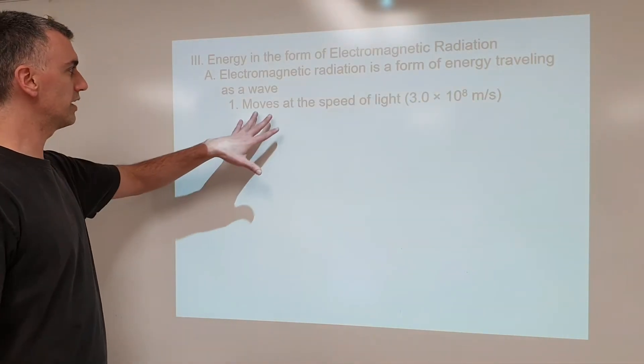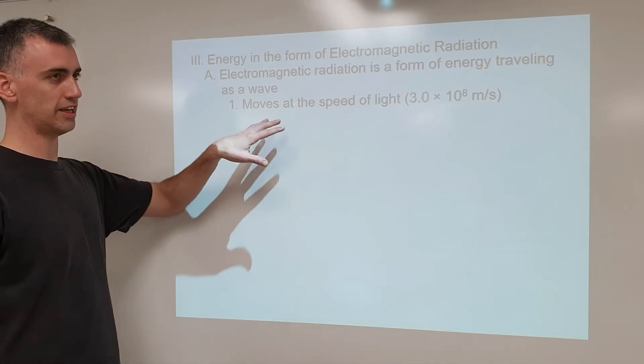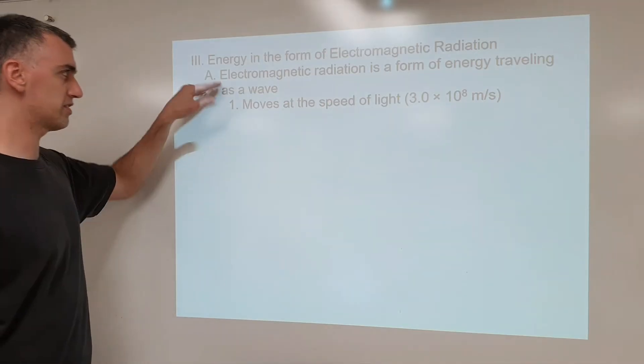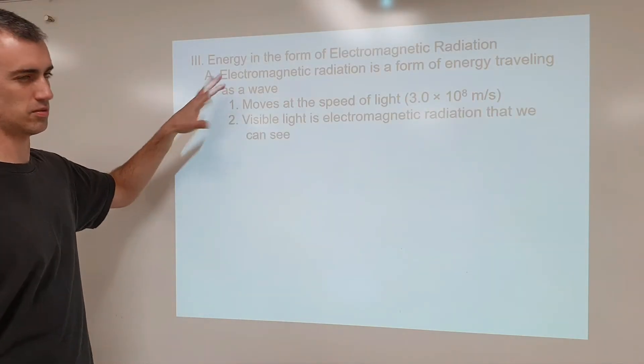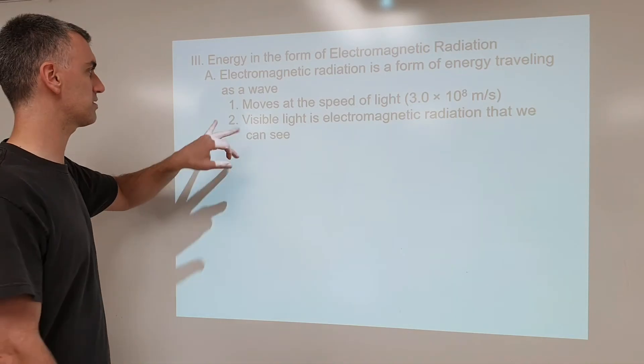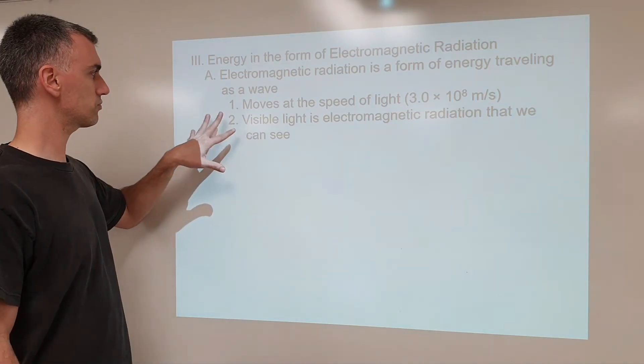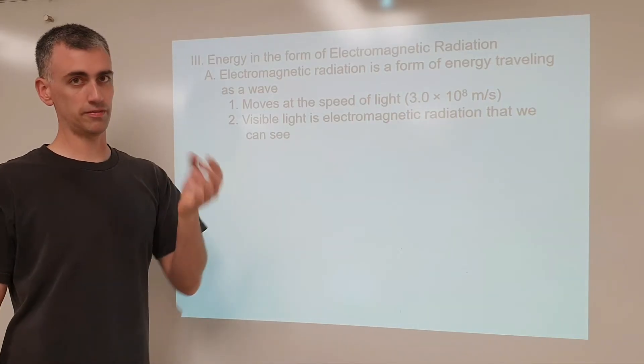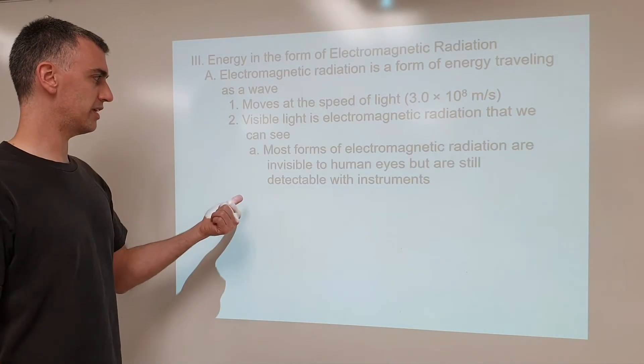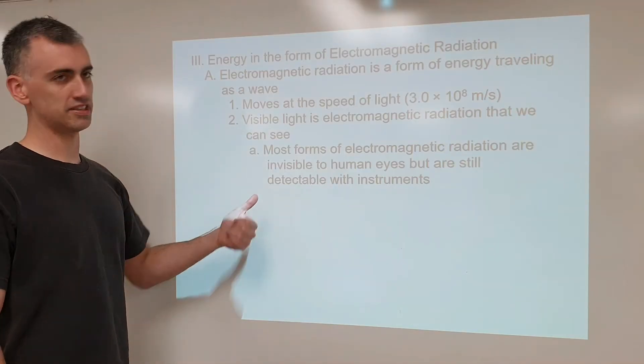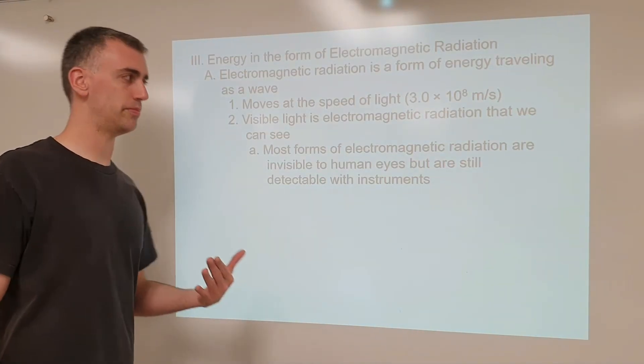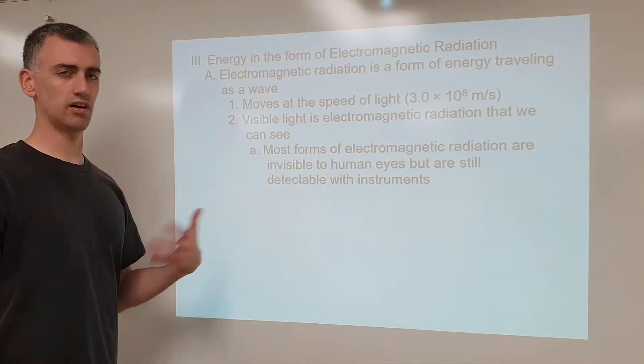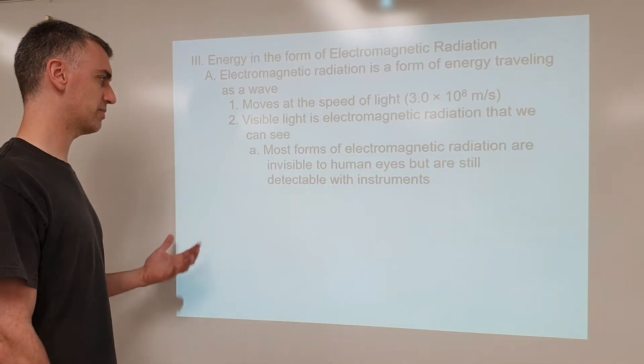So no matter what it is, all forms of electromagnetic radiation, aka light, whether we can see it or not, moves at the same speed. It travels as a wave, which gives it some interesting weird properties. But let's save that for physics class. So the very tiny percentage that we can see is what we call visible light. Most forms of electromagnetic radiation are invisible to human eyes. We can detect them with instruments like an x-ray machine, for example, or microwaves, radio waves, all of it. We can detect it with instruments of one kind or another.